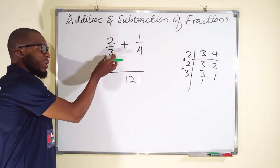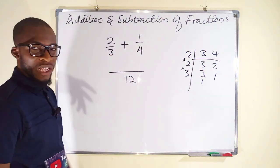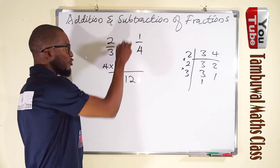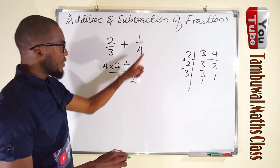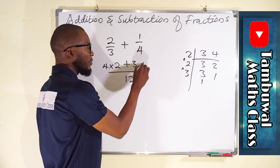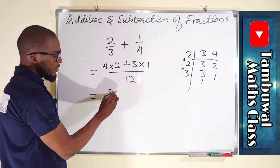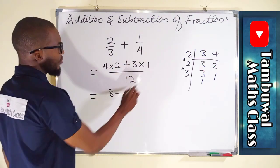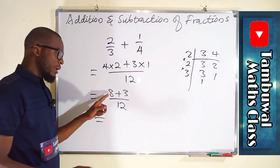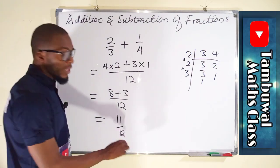Now take the denominator 3 and divide it into 12 — it goes 4 times. Multiply by the top number, which is the numerator. Drop your sign. Take the denominator 4 and divide into 12 — it goes 3 times. Multiply by 1. So we have 4 times 2 is 8, plus 3 times 1 is 3, all over 12. 8 plus 3 is 11, giving us 11 over 12 as our final answer.